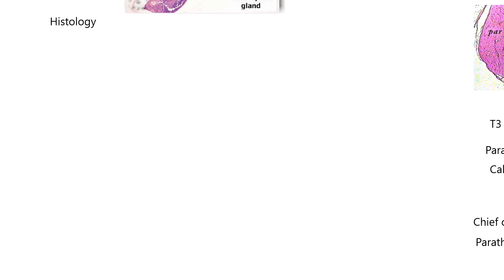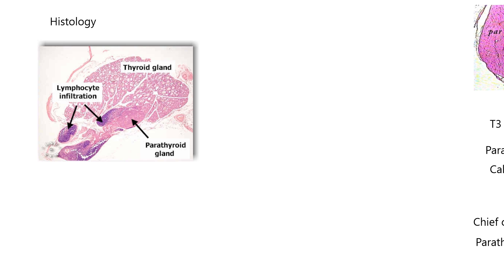Now we're going to do a little histology and then name some hormones - some will be a review and others will be new. Histology means the study of tissue. People have these great stained images available. Here's a thyroid gland with the embedded parathyroid gland. If you look at this lymphocyte infiltration, that means there's a lot of white blood cells gathering in this area, which might indicate a disorder. One thing you should notice is that the thyroid gland always has follicles, whereas the parathyroid gland does not.